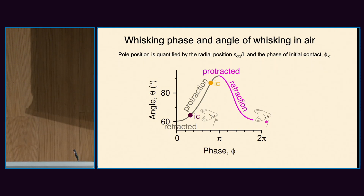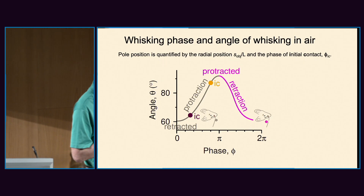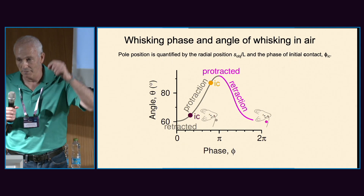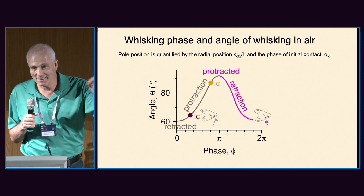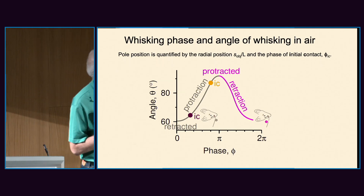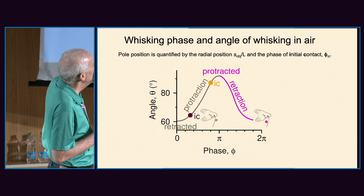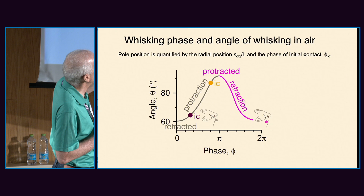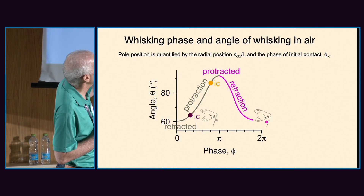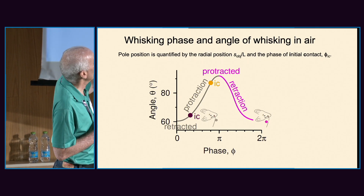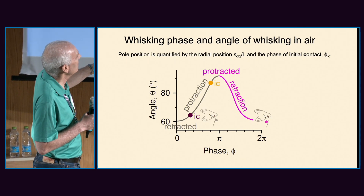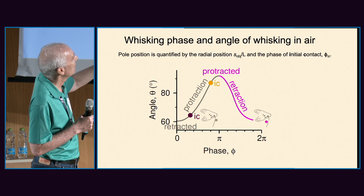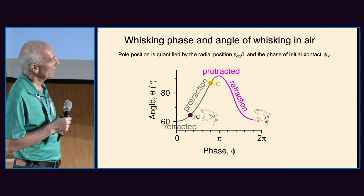To answer this, we first parameterize the position of the object. One parameter is the radial position: S_obj over L, the point of touch normalized by the whisker length. The second parameter is the phase of initial contact, phi_IC. Phi_IC is the phase of whisking from 0 to 2π, where protraction is part of the cycle. The animal can touch the object near maximum retraction at the beginning of protraction, or at the end of the protraction phase.